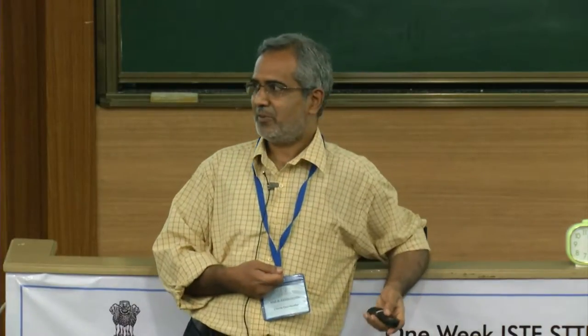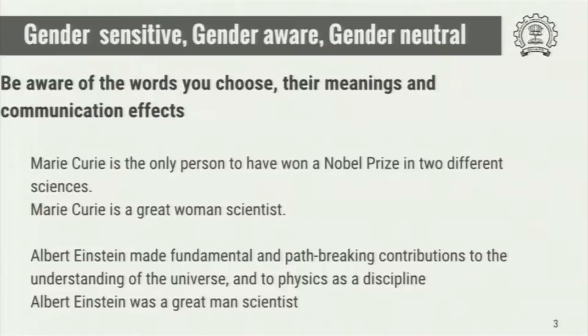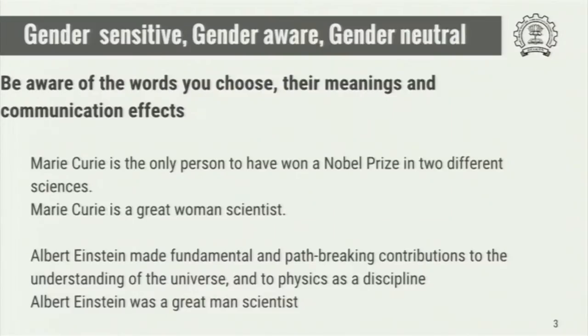Sometimes we are not interested in being gender aware or gender sensitive, and yet needlessly draw attention to gender. For example, someone might say 'Marie Curie is a great woman scientist,' but nobody ever says 'Albert Einstein was a great man scientist.' This is an example of needlessly drawing attention to gender. If you are doing research among great women scientists, then you can mention the gender. Otherwise, just say 'Marie Curie was a great scientist.' If gender is not important, don't bring it in — doing so is an example of stereotyping.